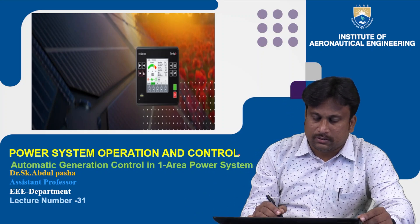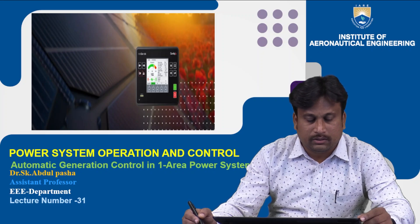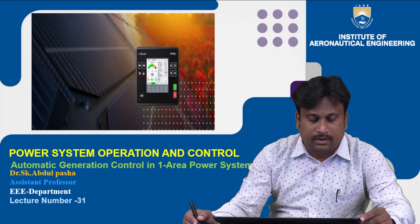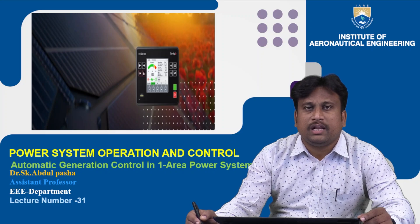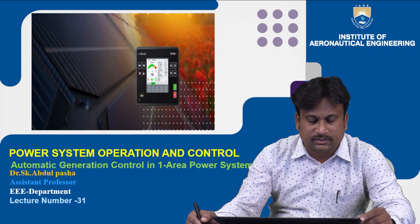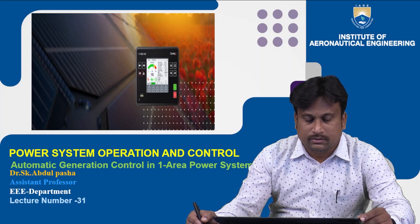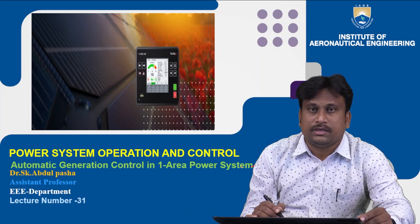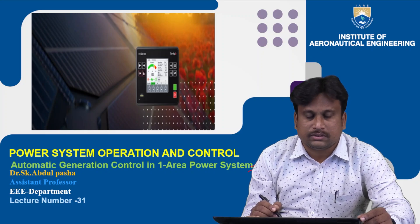This is about the course power system operation and control. We have gone through various cases in control operation, and now it is about automatic generation control in a single area power system network.